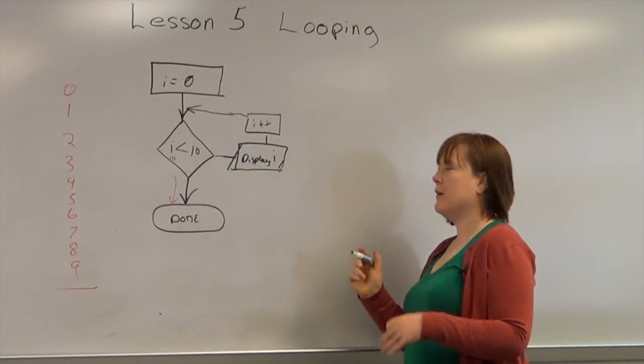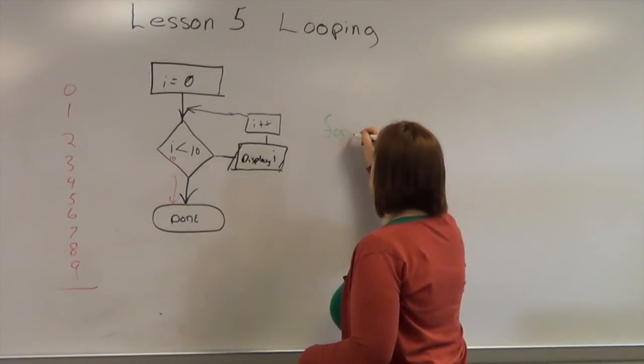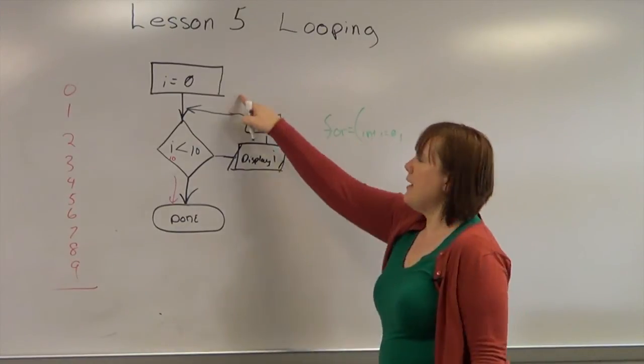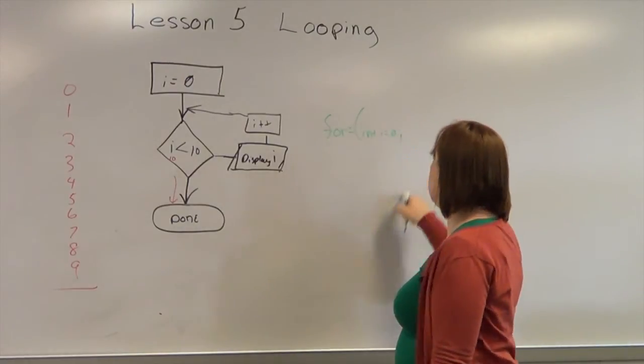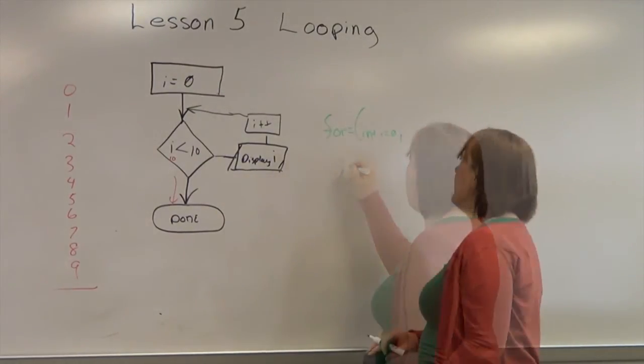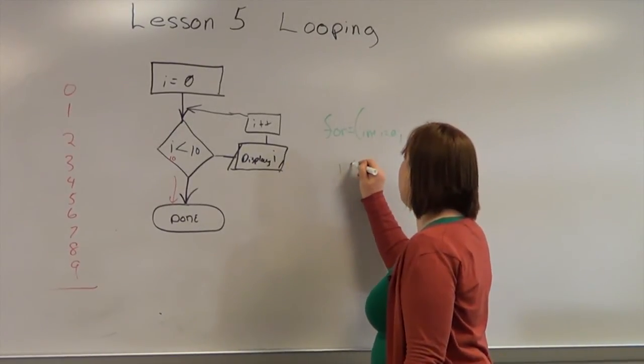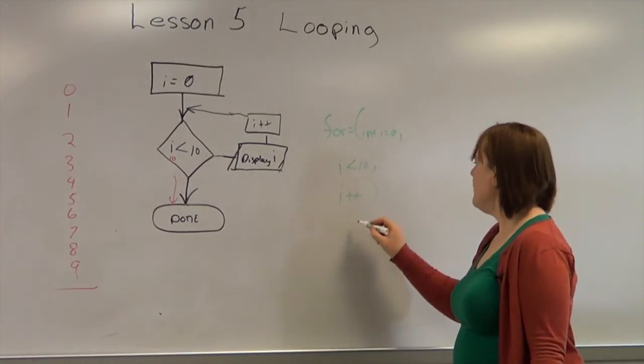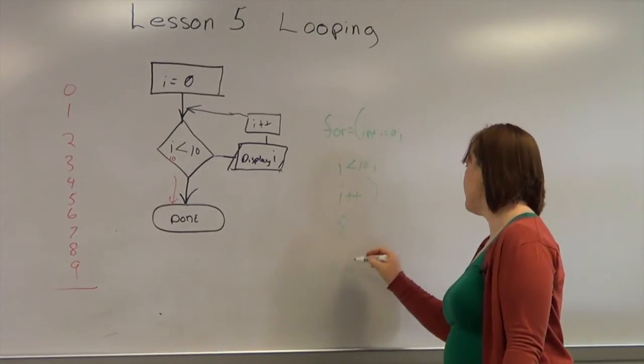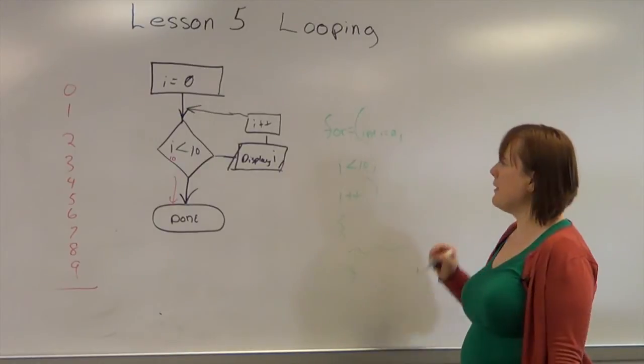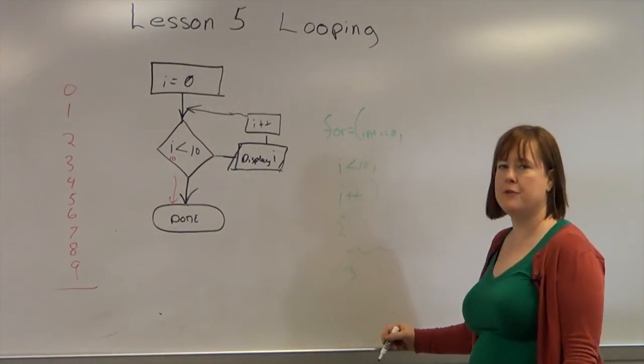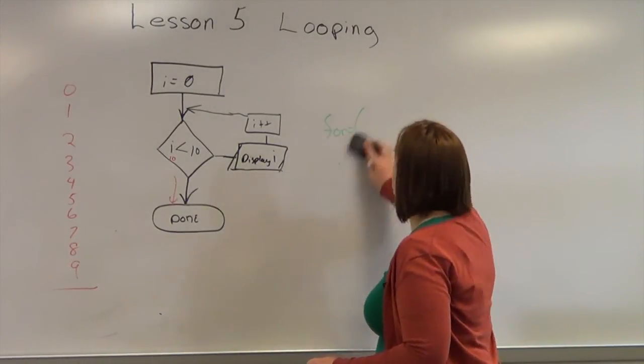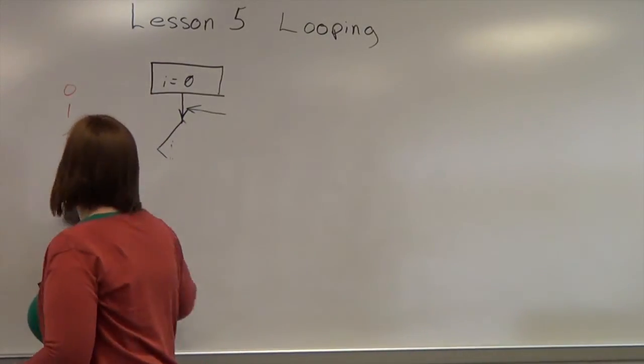When you do a for loop, and this is sort of generic, it's pretty much the same in every language. For int i equals 0, i less than 10, i plus plus. That's the whole statement. You would do everything, usually in brackets, all the statements after it, each time before it incremented. So you could tell it how many times to do something. That's a for statement. You can either increment or you can decrement.